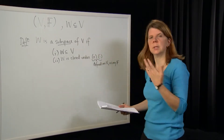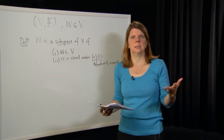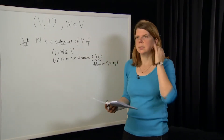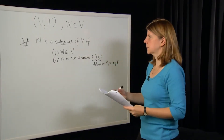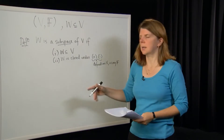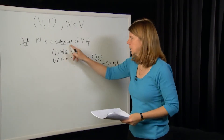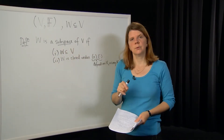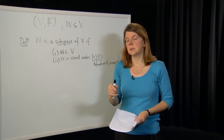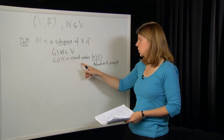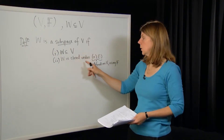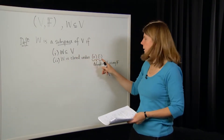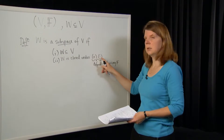How do you check whether something is a subspace? Usually it's obvious what larger set it's a subset of, so that's easy to verify. What you usually have to do is just check that it's closed under vector addition and scalar multiplication.